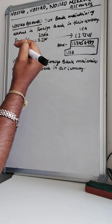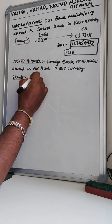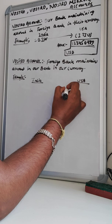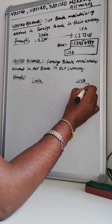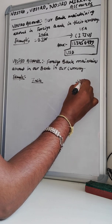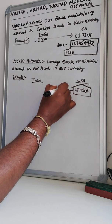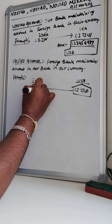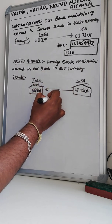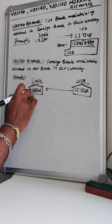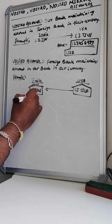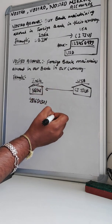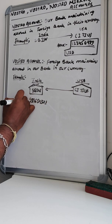For example, our bank is SBI India. Now Citibank US wants to have an account in India at SBI Bank. So Citibank US will maintain an account in SBI Bank — let's say with account number 987654321. This account is maintained at SBI Bank and it will be in Indian National Rupees.